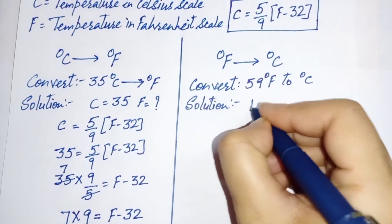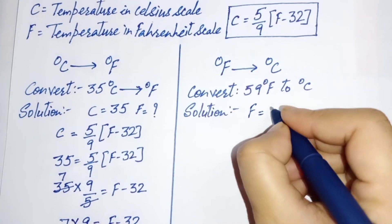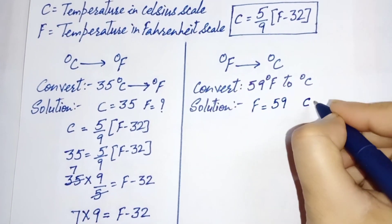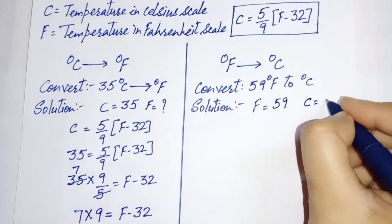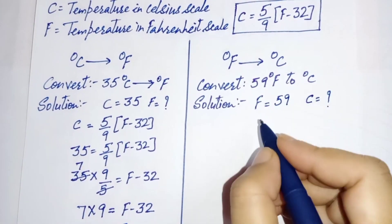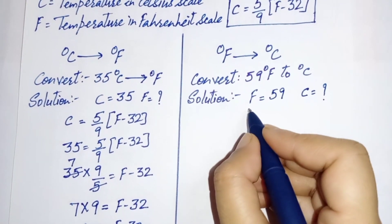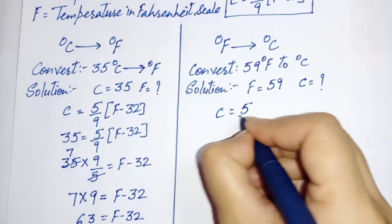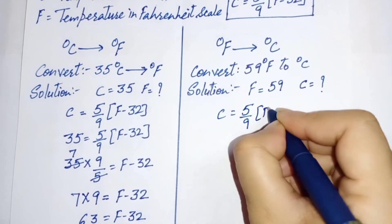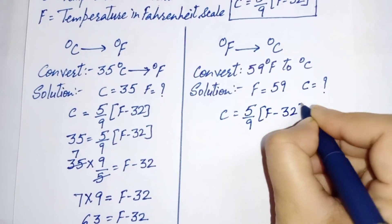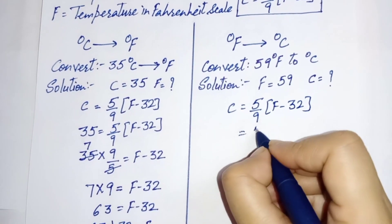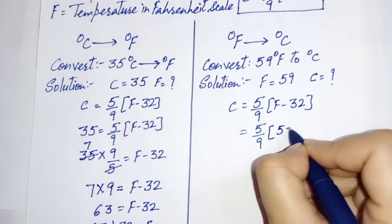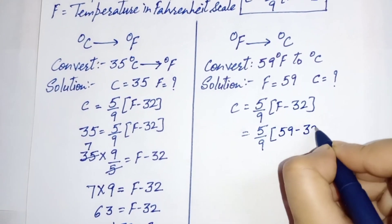Here F is given that is 59 and value of C we have to find out. Now putting the value of F in the equation, 5 over 9 F minus 32, value of F is 59 minus 32.